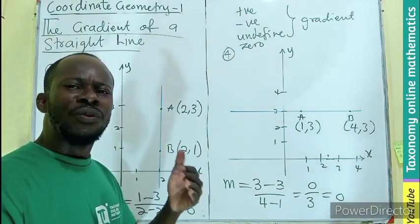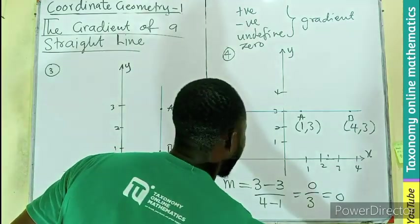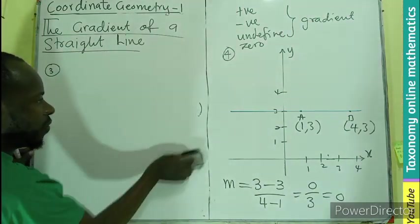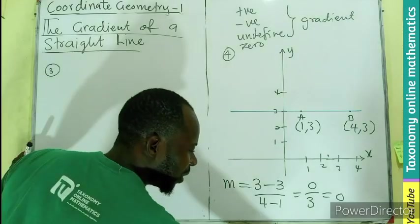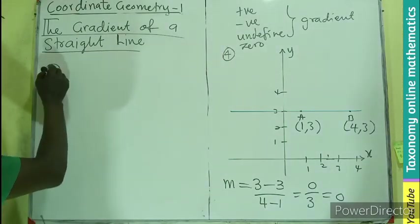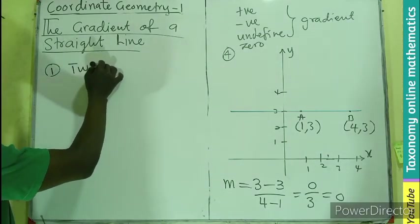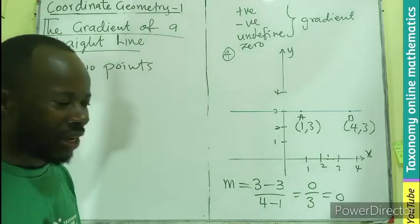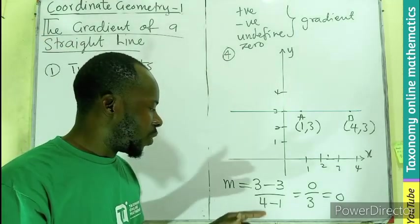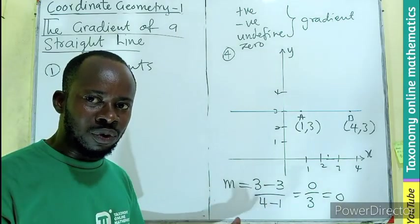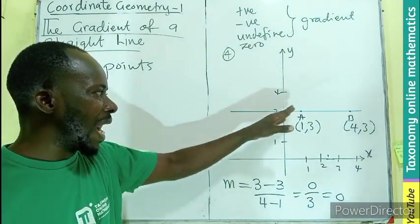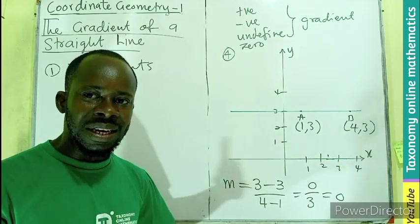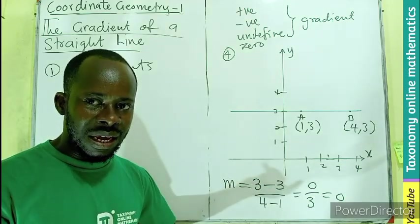Now, how do we find gradient? There are three ways by which we can find the gradient of a line. The first one is when we are given two points on the line — just like we have been doing with y1, y2, x1, x2. If the two points on the line, like A and B, are given, we can easily find the gradient.